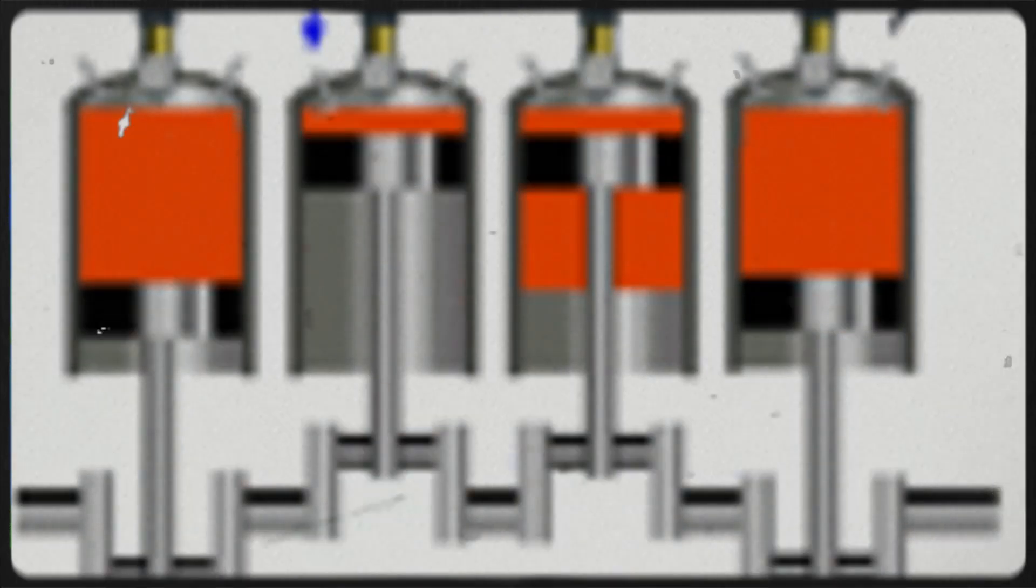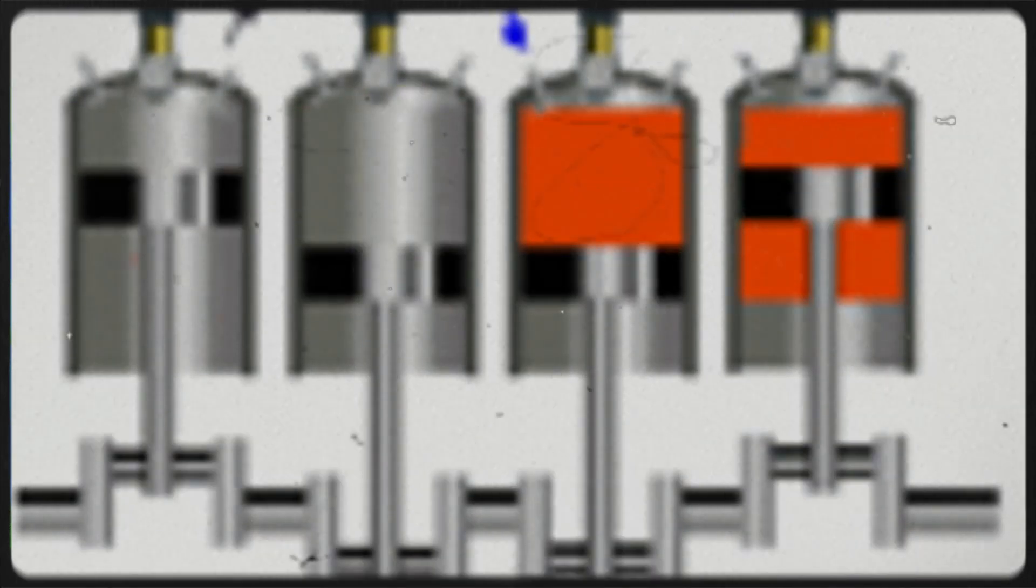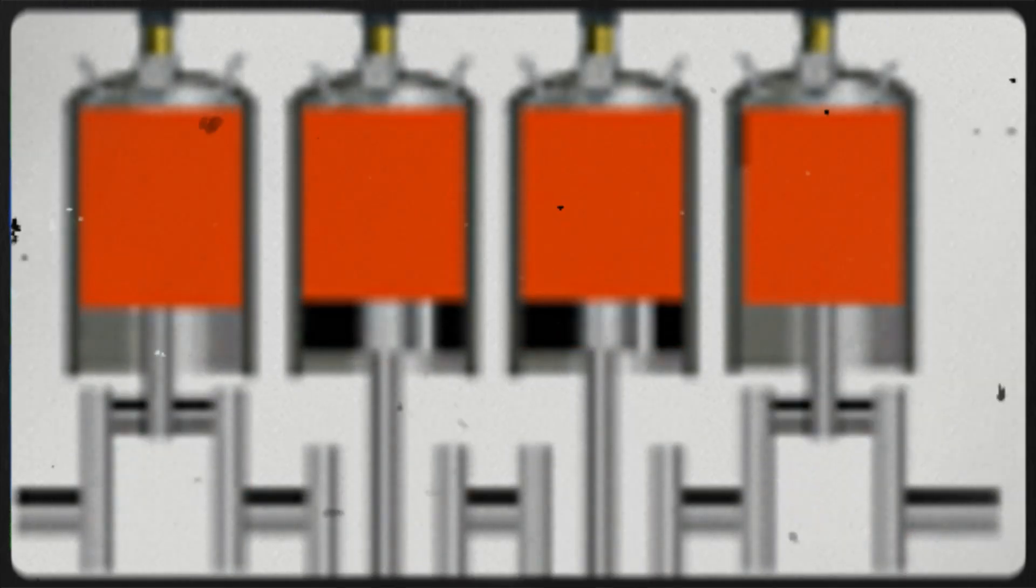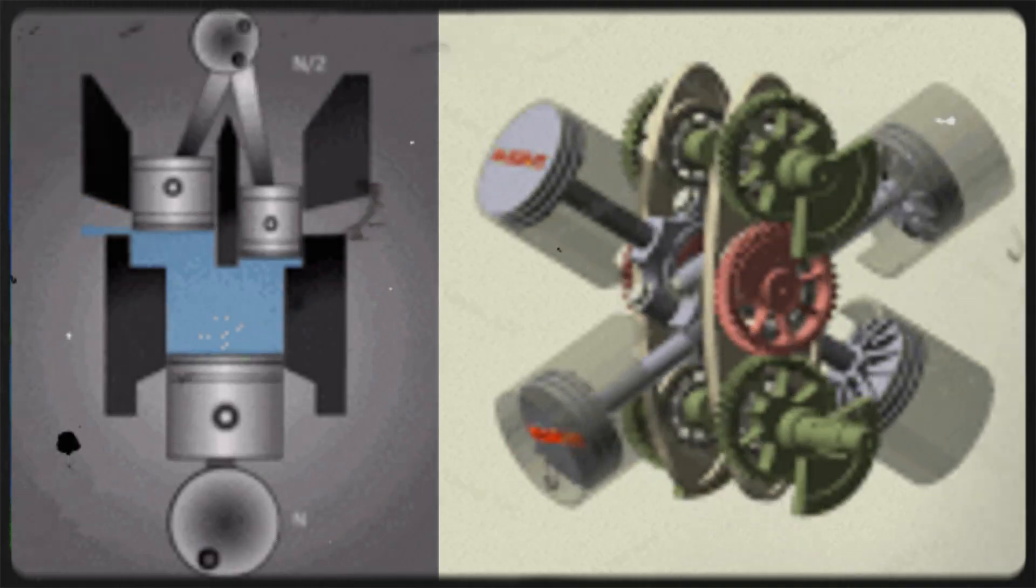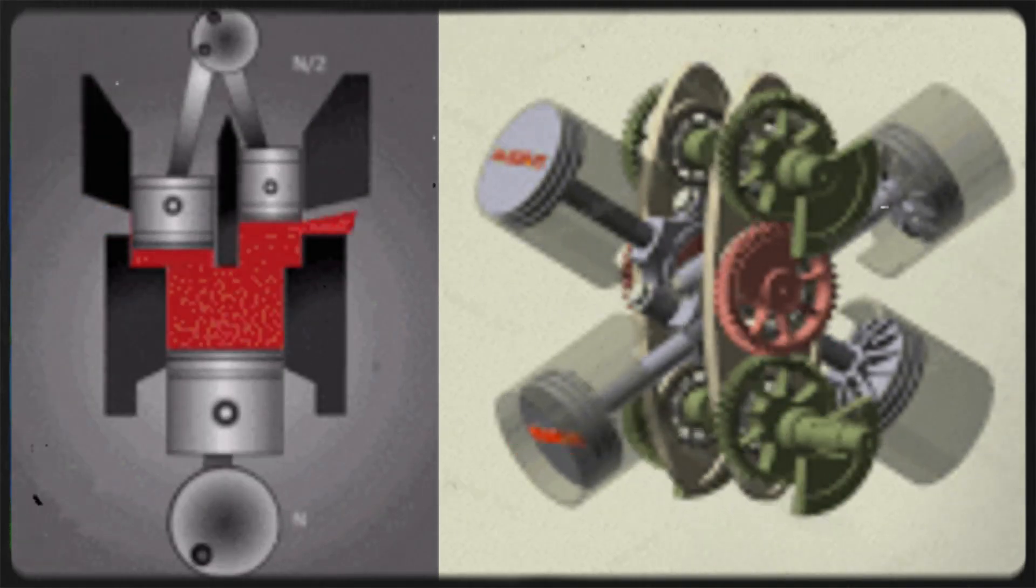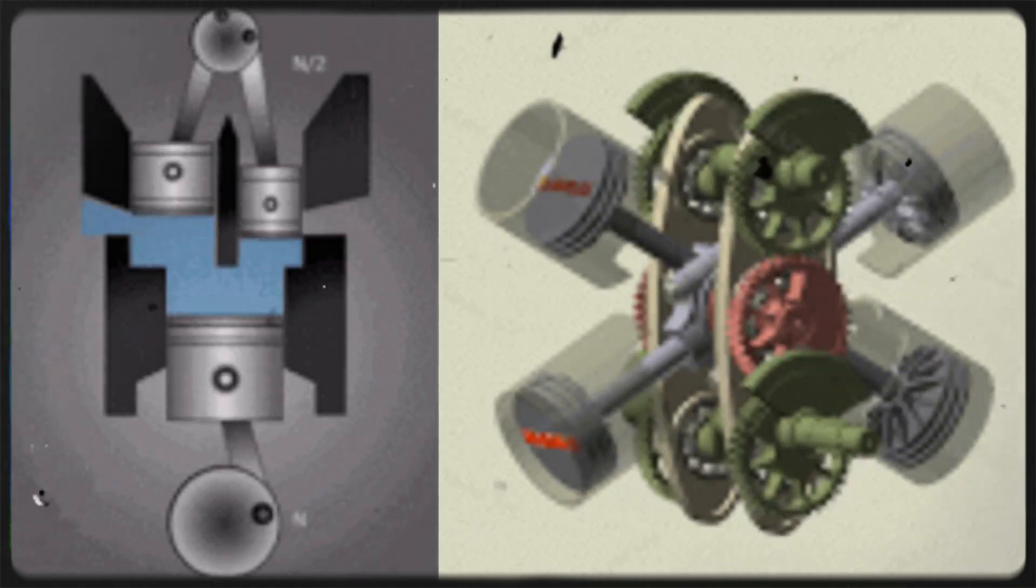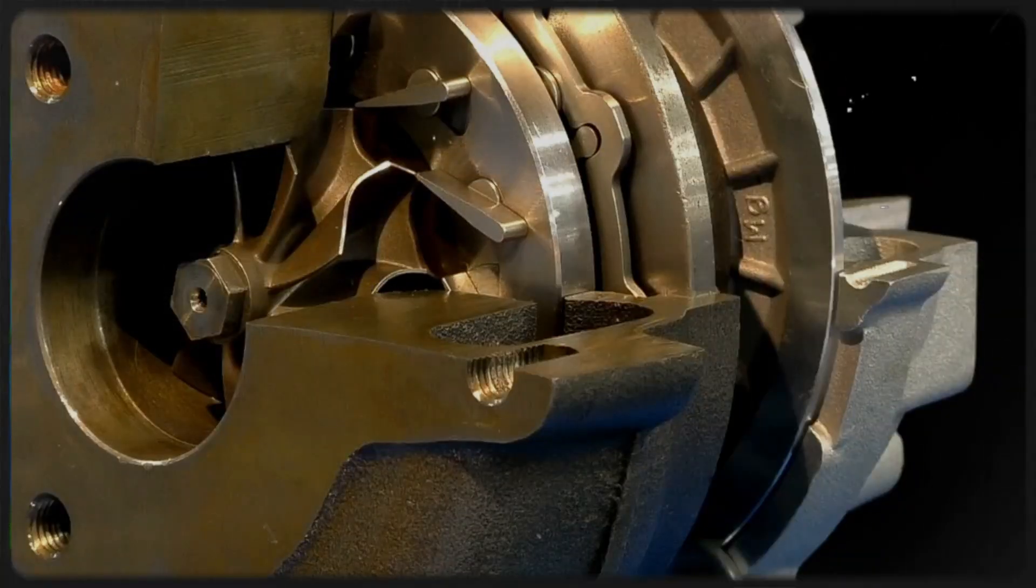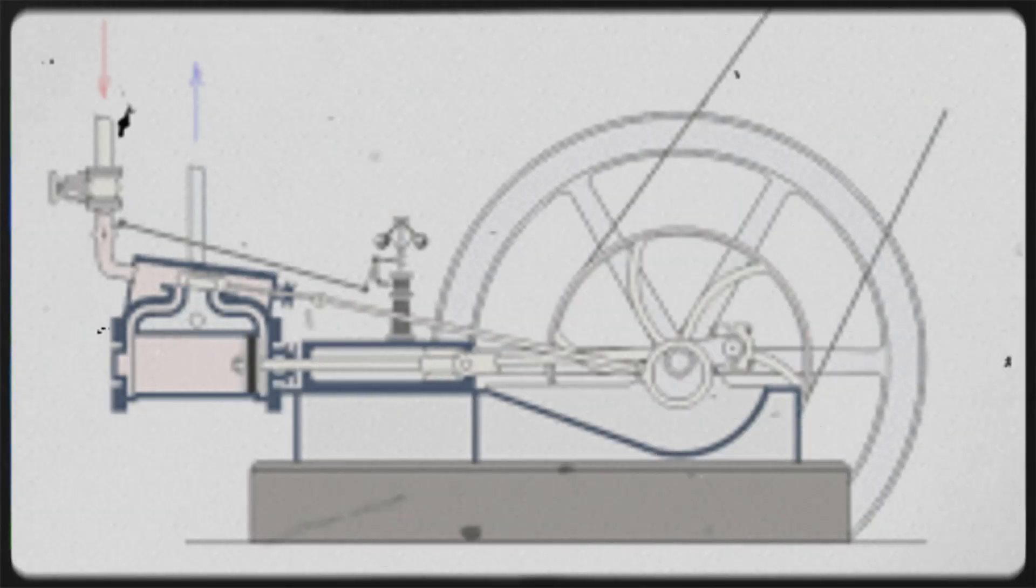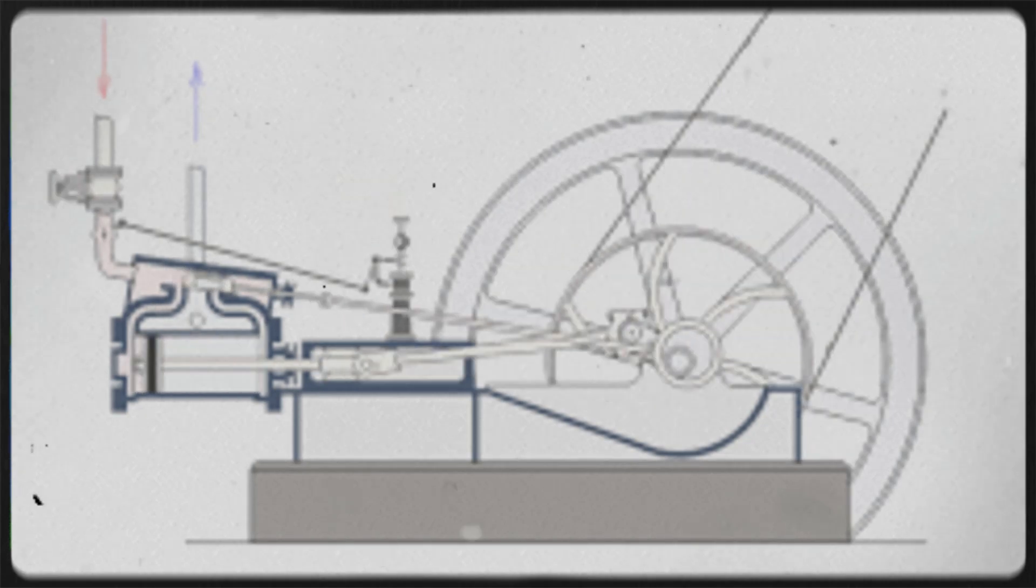Now, diesel engines are a bit different. They don't have spark plugs. Well, most of them don't. Instead, they rely on something called compression ignition. Here's how it works. During the intake stroke, the engine sucks in only air, no fuel mixed in yet. Then during the compression stroke, this air is compressed so much that its temperature rises dramatically, sometimes over 500 degrees Celsius. When the piston reaches the top of the cylinder, fuel is injected directly into this super hot compressed air. Because the air is so hot, the fuel ignites immediately without needing a spark. This is why diesel engines can run without spark plugs.